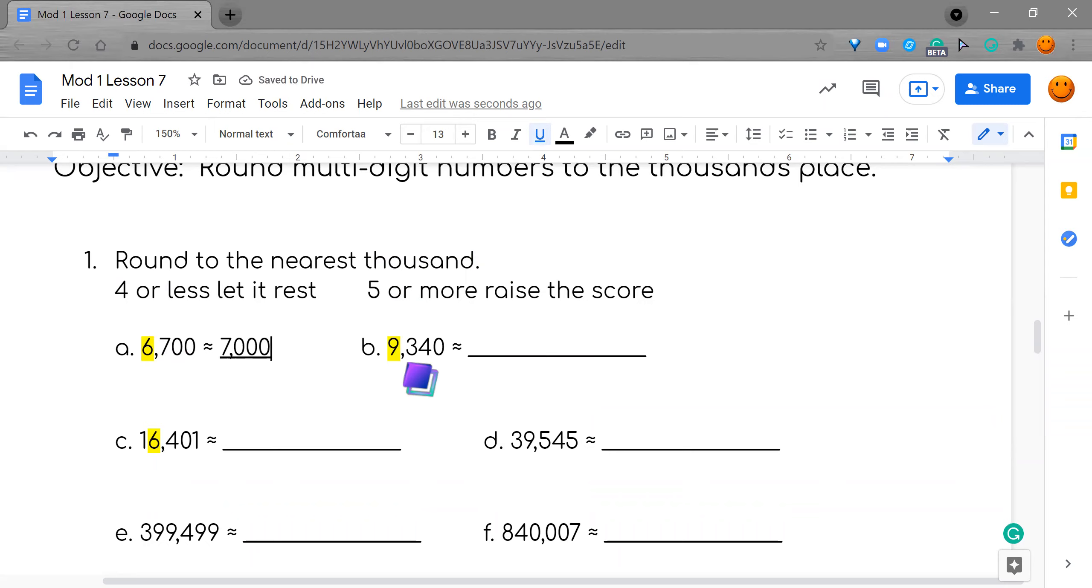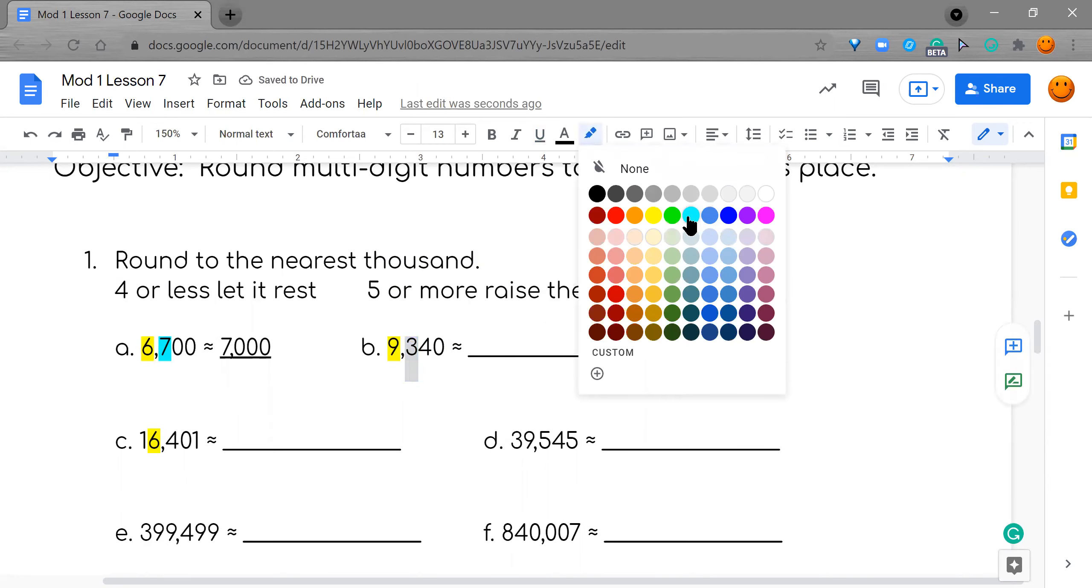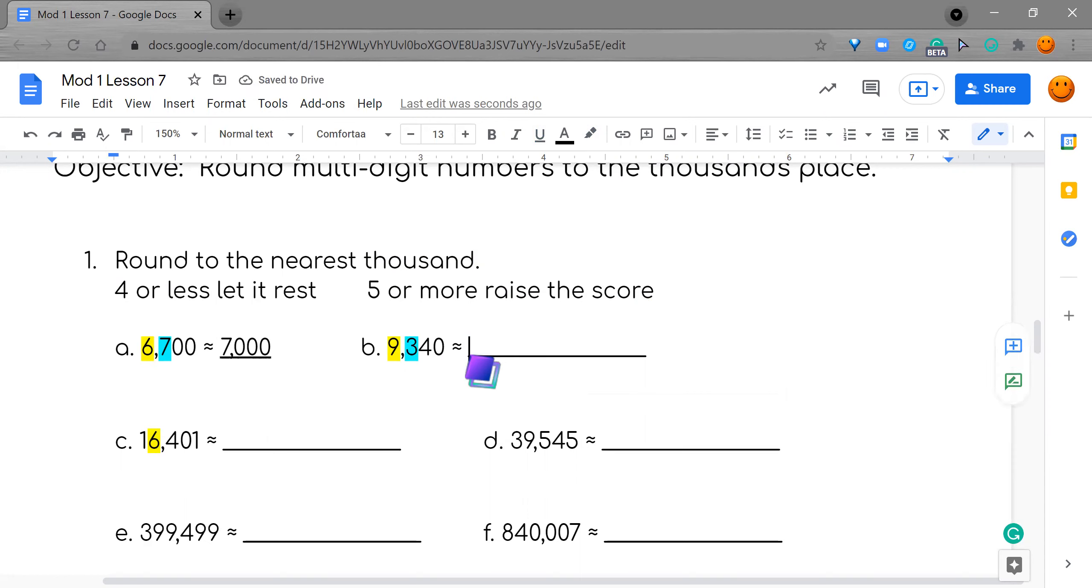So let's try this again. We have this one. Does that three want the nine to rest or does the three want to raise the score? Yes, let it rest. So I'll put my nine down with the comma, and remember, I put zeros in its place. So every number, the three, the four, it all becomes zero. I'm going to put zeros in its place.